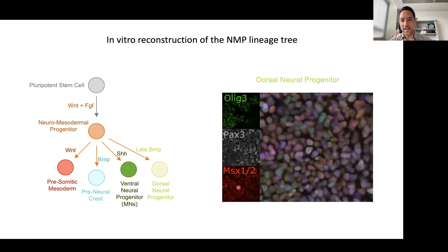Finally, we found that we could use BMP to derive dorsal neural progenitors. Here we use a late pulse of BMP, and you can see that most all the progenitors are co-expressing PAX3 and MSX, and a portion of them are also expressing OLIG3.